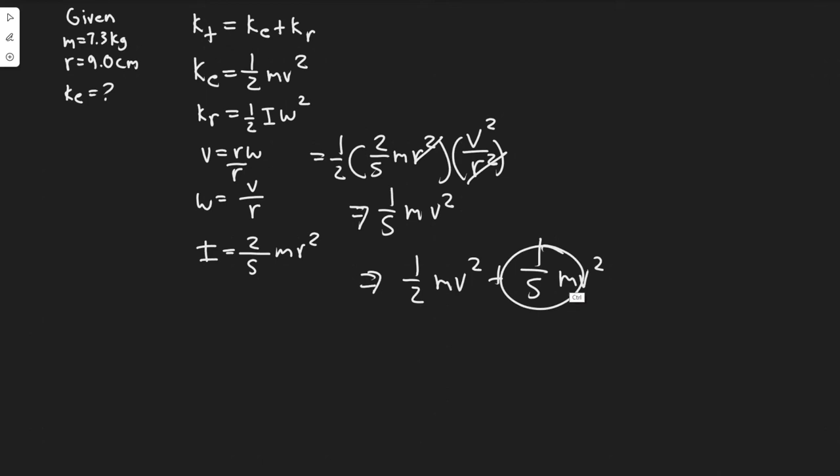If we want to combine these, you can make this 5 over 10 and this would be 2 over 10. So adding them is 7 over 10. This would be 7 over 10 m v squared.